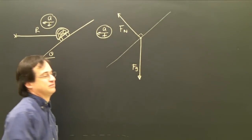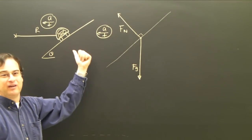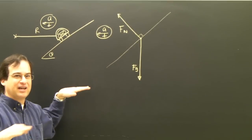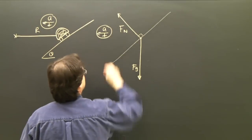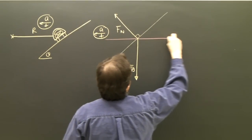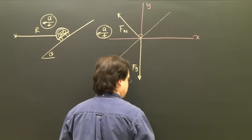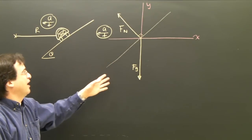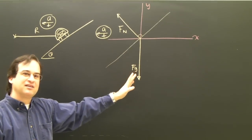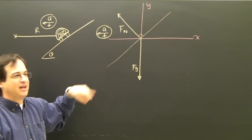I'm going to make that positive. If it's accelerating this way, then we need to make our x axis in the direction of acceleration. So I'm going to make this my x axis and this my y axis. Once we have the two axes, we need to break up anything that is at an angle to that axis and label it.